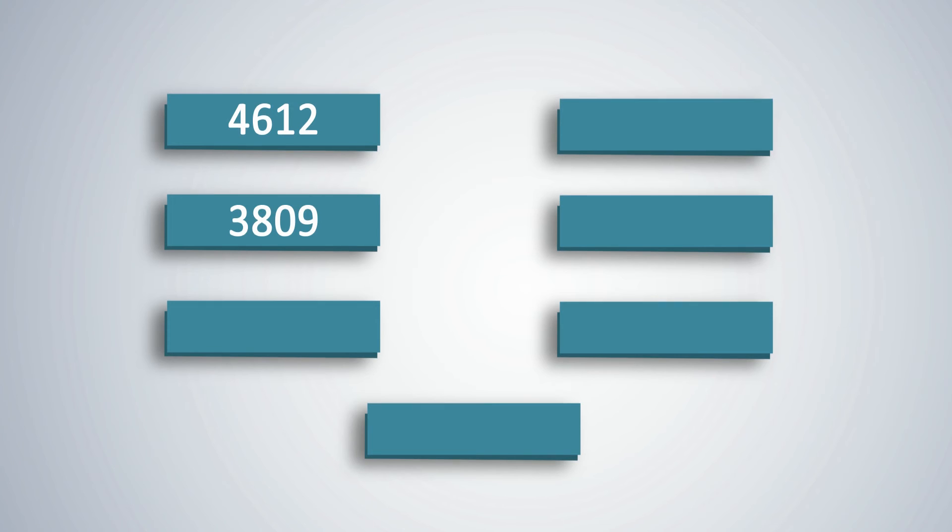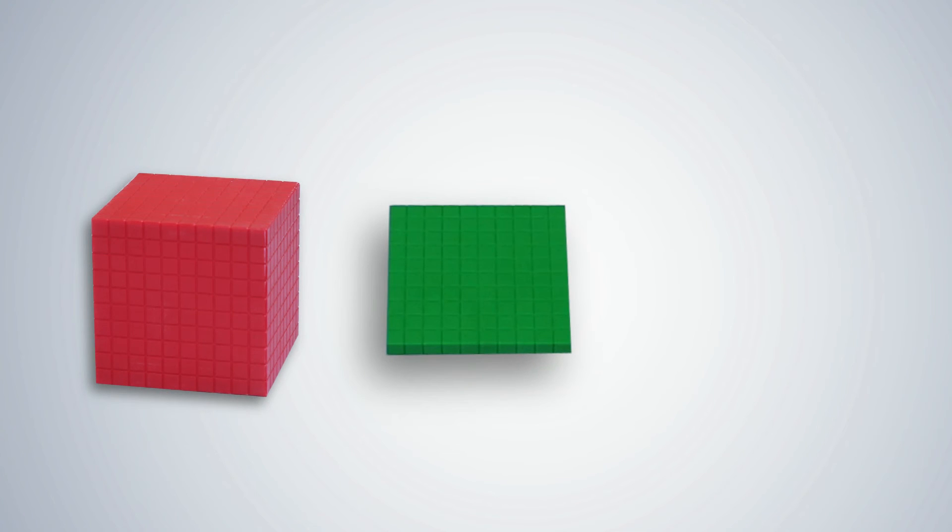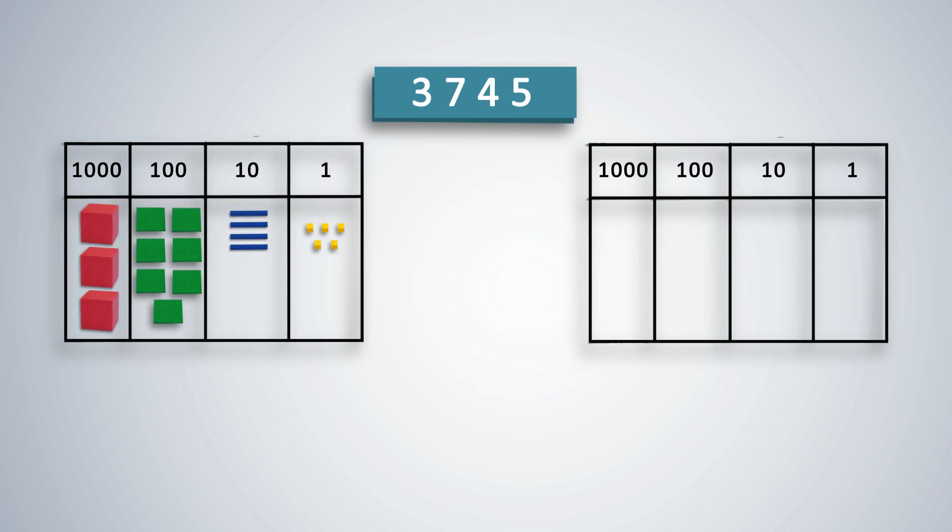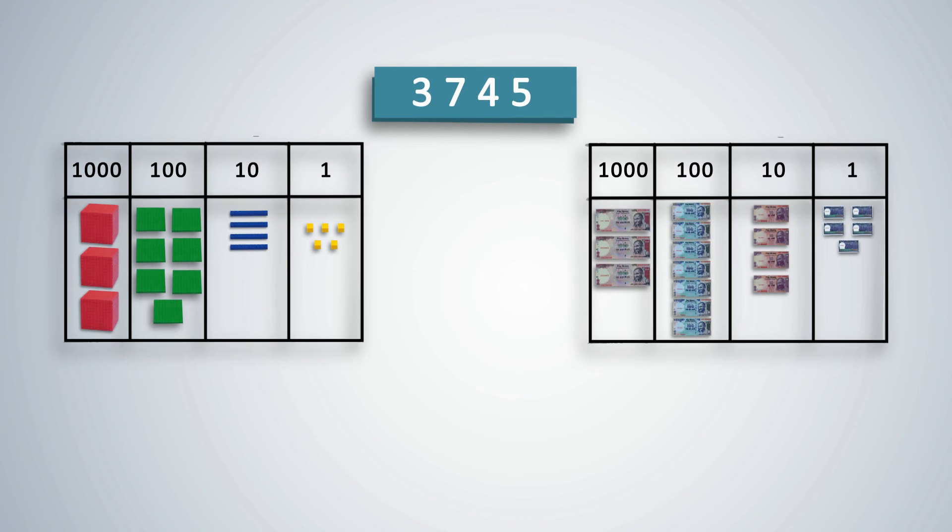For practice, let students represent a few more numbers on the abacus or base 10 blocks and then write the face value and place value of each digit. Now that students have understood the place value of digits, they need to know how to write the expanded form of numbers using place value strips. First step, represent the number 3745 using base 10 blocks or play money on the place value mat. Introduce students to the place value strips. Red strips represent 1000s, green strips represent 100s, blue strips represent 10s, and yellow strips represent units.